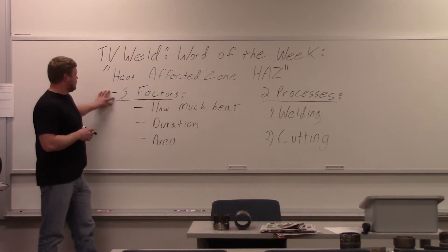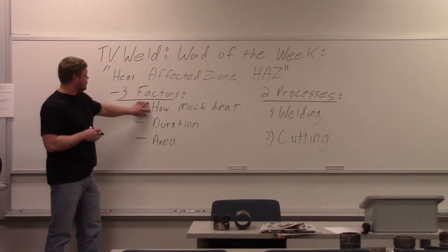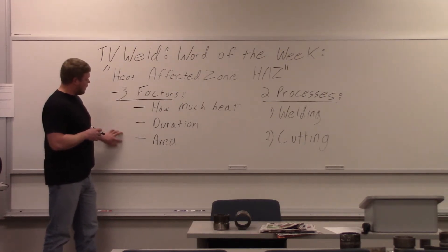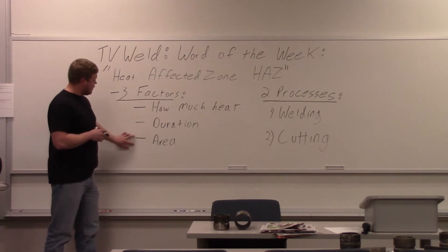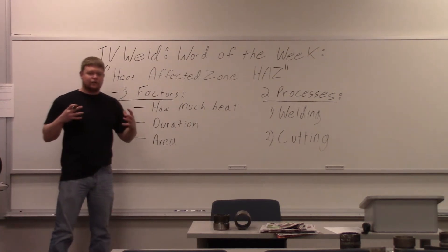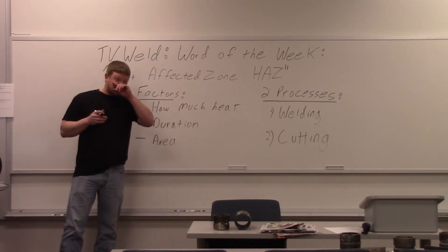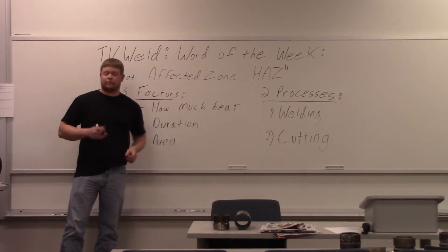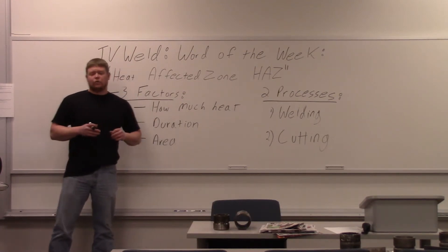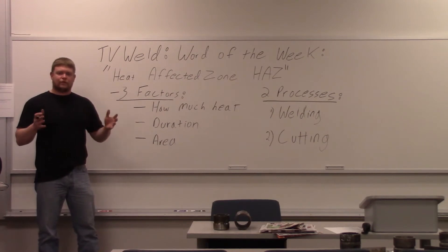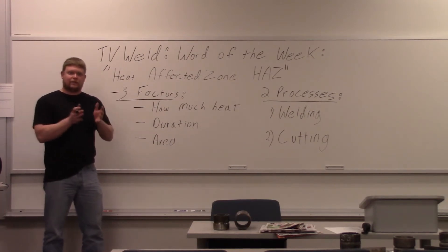There are three factors that affect the heat affected zone: how much heat you put into it, the duration that heat is there, and how much area the heat is applied to. Those factors determine how large the heat affected zone is. The material also plays a role — different materials let heat dissipate differently, travel through the material differently, or keep it contained.